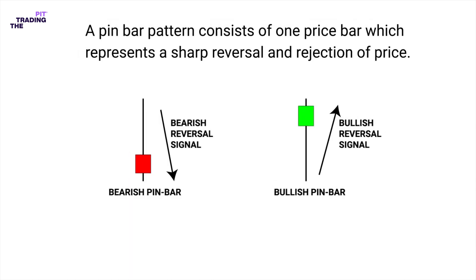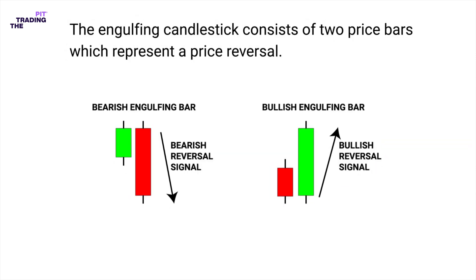A pin bar pattern consists of one price bar which represents a sharp reversal and rejection of price. We have a bullish and bearish pin bar. The engulfing candlestick consists of two price bars which represent a price reversal. We have bullish and bearish engulfing candlestick.